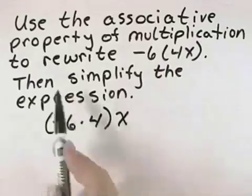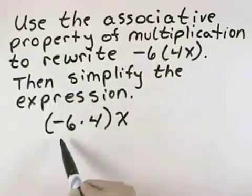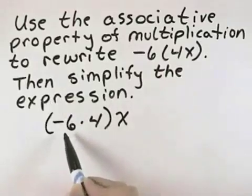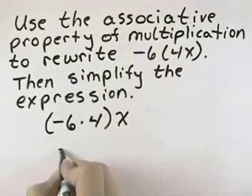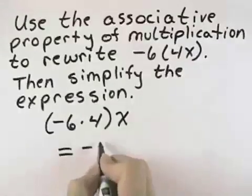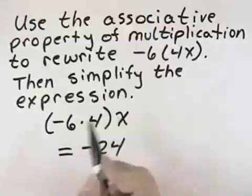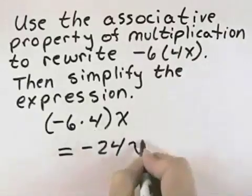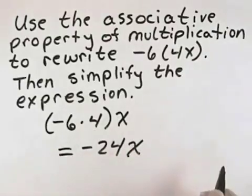Now that it's rewritten, we want to simplify the expression. Well, we can simplify it because we can take the product of negative 6 times 4, because negative 6 times 4 is negative 24. And so now we have negative 24 times x. So written in simplified form, we have negative 24x.